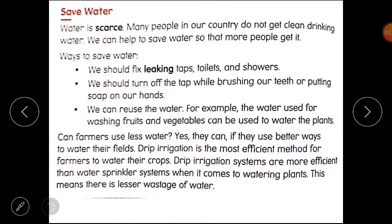Now students, please open your content book of science, lesson number 3, save water. Let's start reading. Water is scarce. Many people in our country do not get clean drinking water. We can help to save water so that more people get it. Ways to save water. First one is, we should fix leaking taps, toilets and showers. Next one is, we should turn off the tap while brushing our teeth or putting soap on our hands. Last one is, we can reuse the water. For example, the water used for washing fruits and vegetables can be used to water the plants.